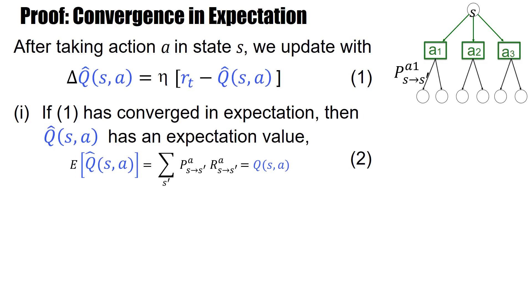Welcome to this extra video. In this video, I will give a two-line proof of the convergence in expectation that we have seen in the previous video. So what's the rule? The learning rule is if we use this update rule 1, delta q is r minus q times eta.